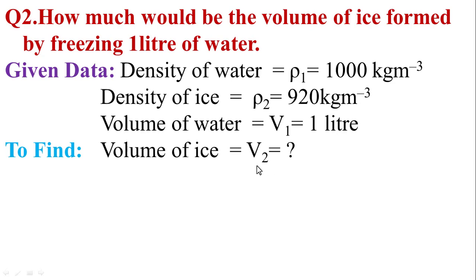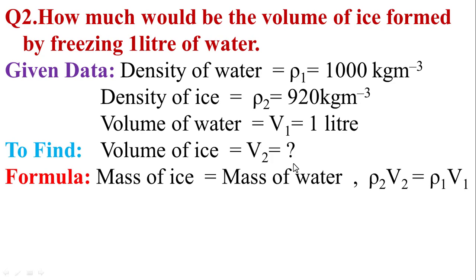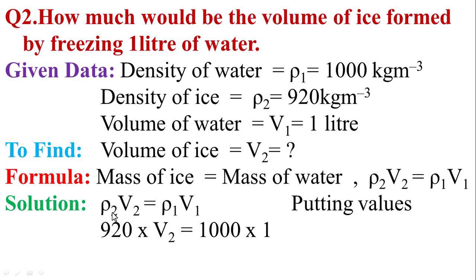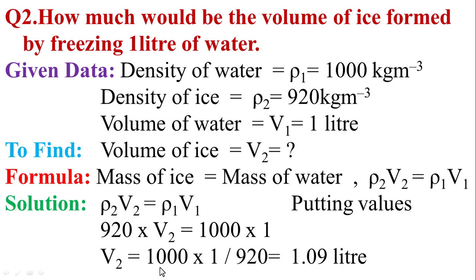We need to find the volume of ice, V₂. By using the formula, mass of ice is equal to mass of water. Since density = mass/volume, mass = density × volume. So rho₂ × V₂ = rho₁ × V₁. Putting the values: 920 × V₂ = 1000 × 1. Therefore V₂ = 1000/920. The final answer is 1.09 liters.